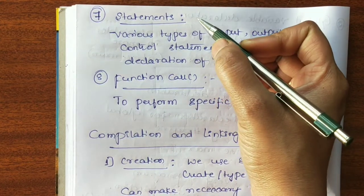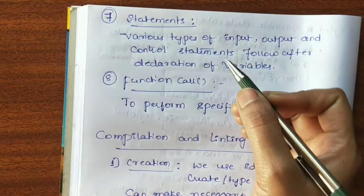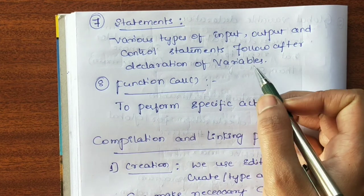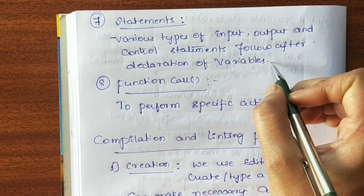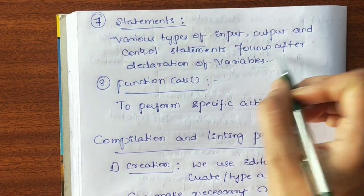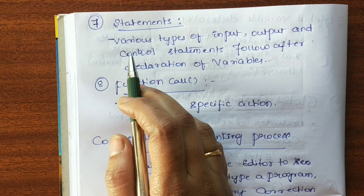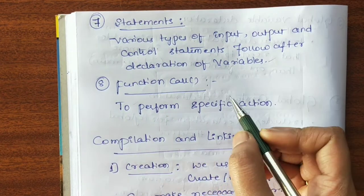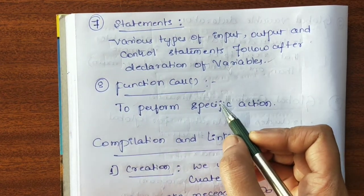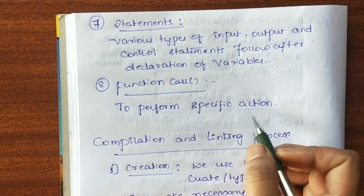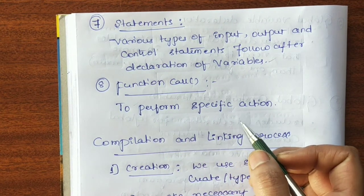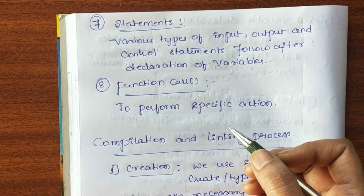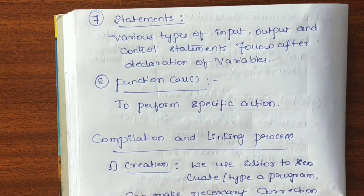The next part of the program is statements. Various types of input, output, and control statements are present in the program. We are going to make use of many statements in our C program. Then the function call — to perform a specific action. If we want to add or subtract, the call will go to a particular function.